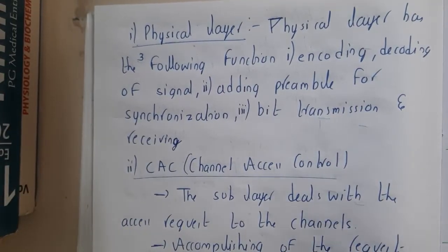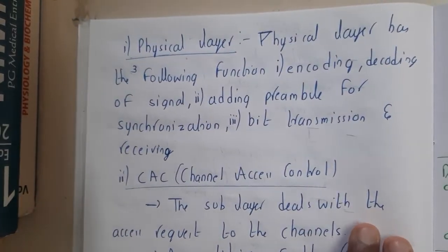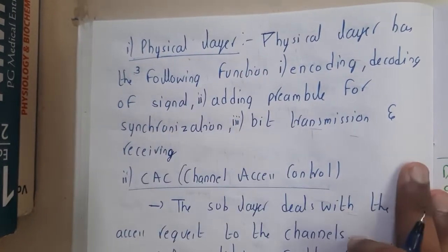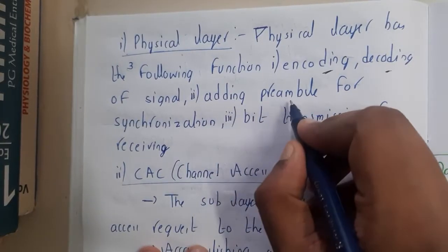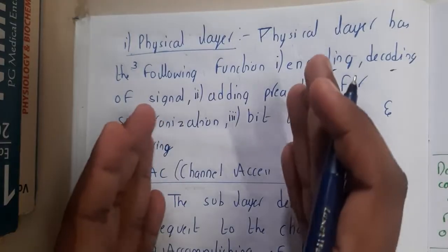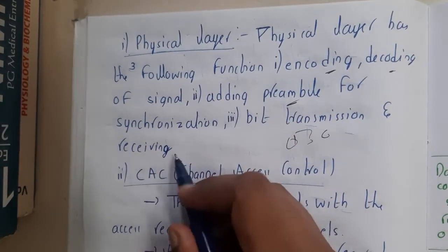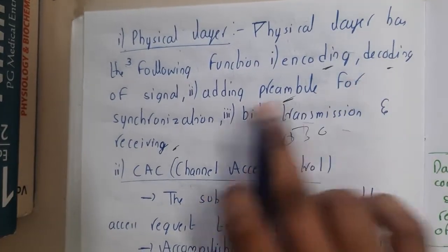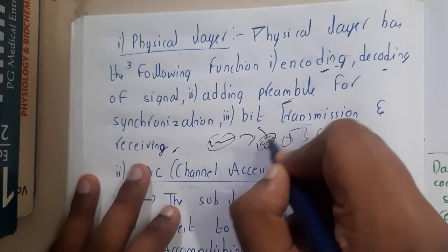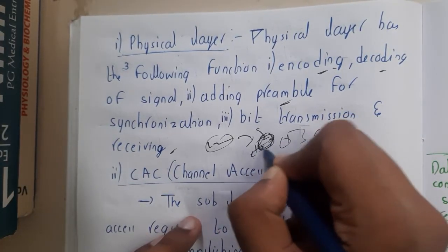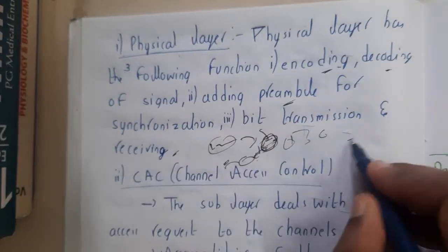These layers resemble the OSI model. The Physical layer has three functionalities: encoding the signal, decoding the signal, and adding preamble bits for synchronization. Encoding means converting data into binary or another format; decoding reverses this at the receiver. Preamble bits are extra bits added for synchronization, and the layer also handles bit transmission and reception.